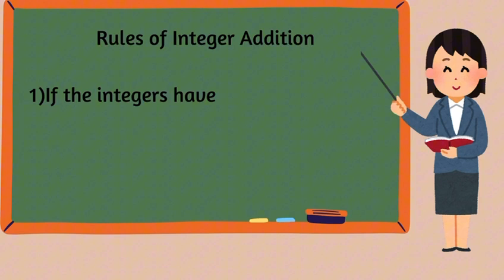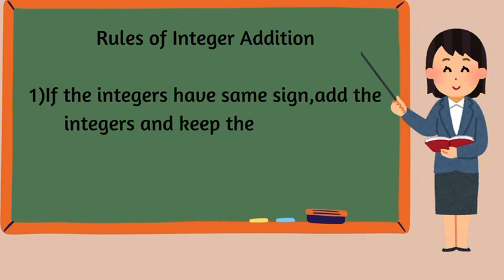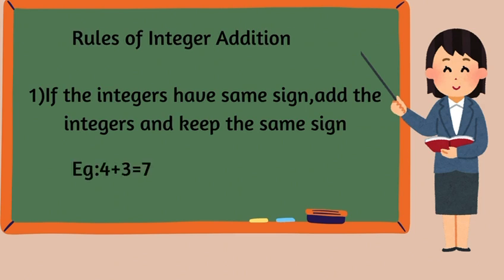Rules of integer addition: if both integers have the same sign, add the integers and keep the same sign. Example: 4 plus 3 equals 7. And negative 2 plus negative 1 — both have the same sign (negative) — so add the integers and put the negative symbol on the answer: 2 plus 1 equals 3, so the answer is negative 3.